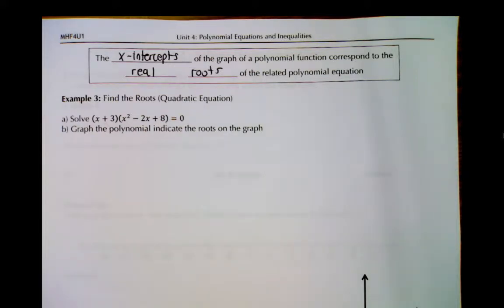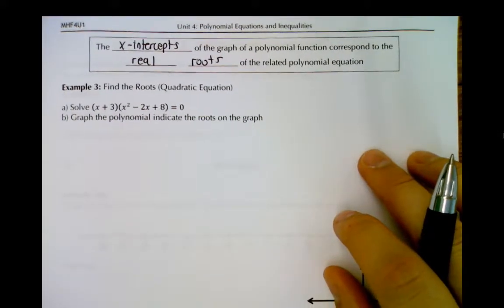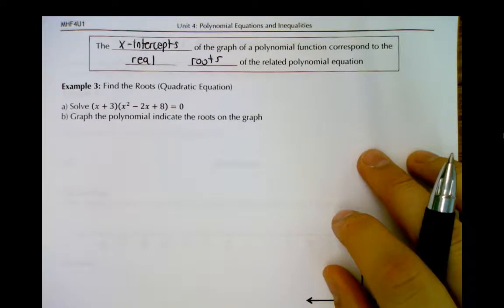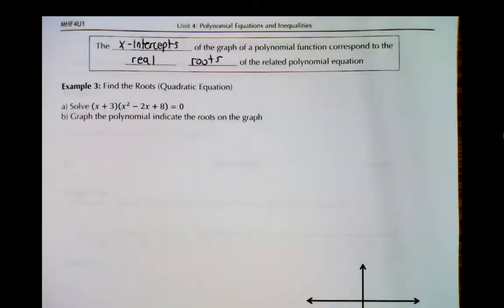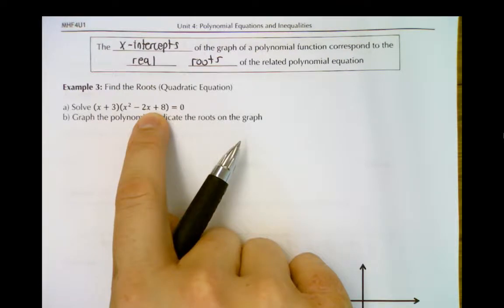Another example where we have real roots that lend themselves to x-intercepts is when we end up with a quadratic equation as part of our factored form that isn't factorable, but we can use the quadratic formula. If we end up with real roots from the quadratic formula we'll have x-intercepts. If we end up with non-real roots, then we won't.